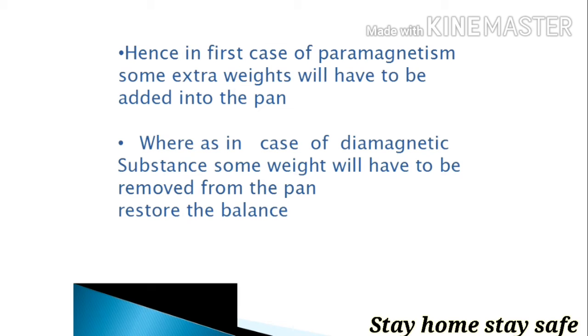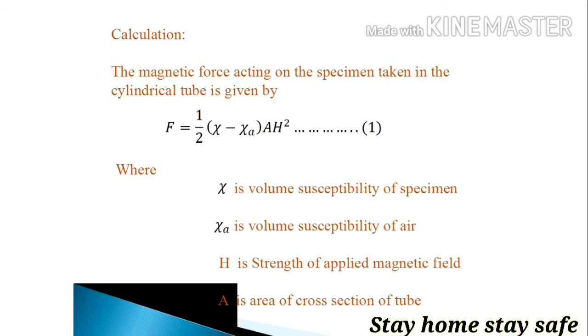Hence, in case of paramagnetism, some extra weight will have to be added into the pan to balance it. And in case of diamagnetic substance, some weight will have to be removed from the pan to restore the balance.